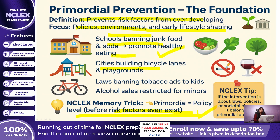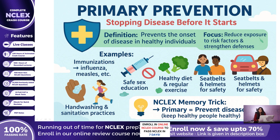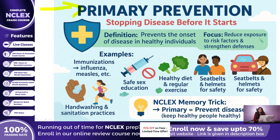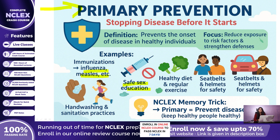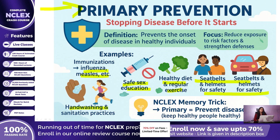Primary Prevention — stopping disease before it starts. Once risk factors exist, our next focus is primary prevention. Here, the goal is to keep healthy people healthy by stopping disease before it begins. Examples include immunizations like giving influenza or measles vaccines, encouraging smoking cessation, teaching about safe sex practices, promoting exercise and healthy diets, and implementing environmental safety measures such as wearing seatbelts and helmets. Nurses also provide education on handwashing and proper sanitation — classic examples of primary prevention.